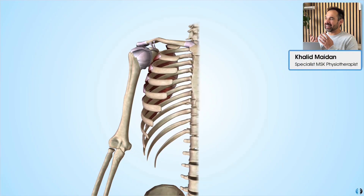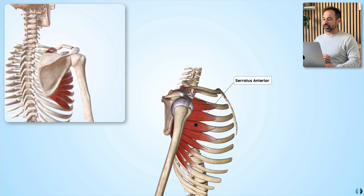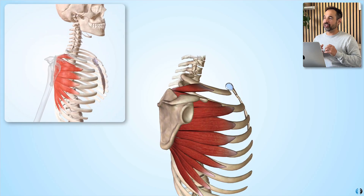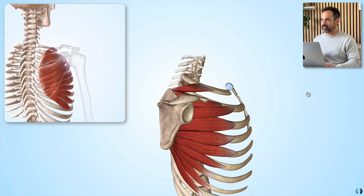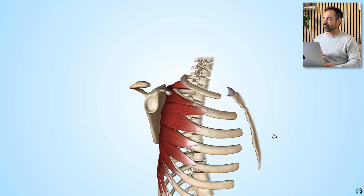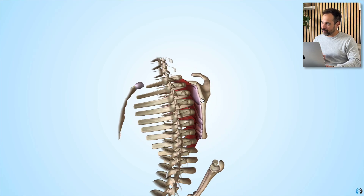We're going to look at the clinical anatomy of the serratus anterior muscle — an absolutely fascinating muscle that really does need to be explored. I'm just going to remove the humerus, the clavicle, and the glenohumeral joint as a whole to show you this muscle. It runs from the anterior ribs through the gap between the ribs and the scapula, then over the rib cage before it inserts into the medial wall of the scapula.